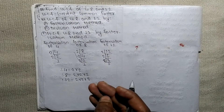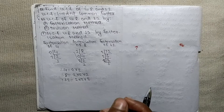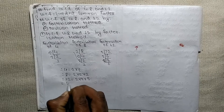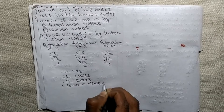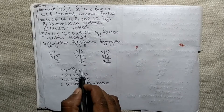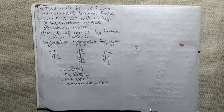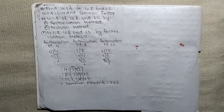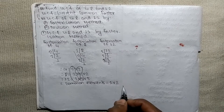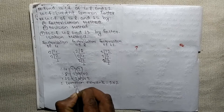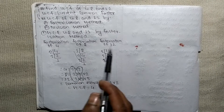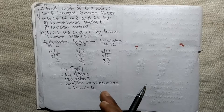As we know, GCF is the product of all the common elements. So we determine the common elements across all three numbers. Looking at 4 = 2 × 2, 8 = 2 × 2 × 2, and 12 = 2 × 2 × 3, the common elements are 2 and 2. Therefore GCF = 2 × 2 = 4. So the GCF of 4, 8 and 12 is 4 by the factorization method.